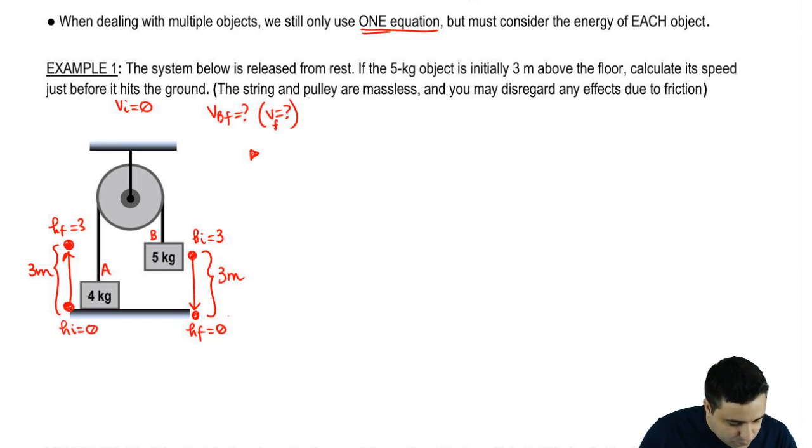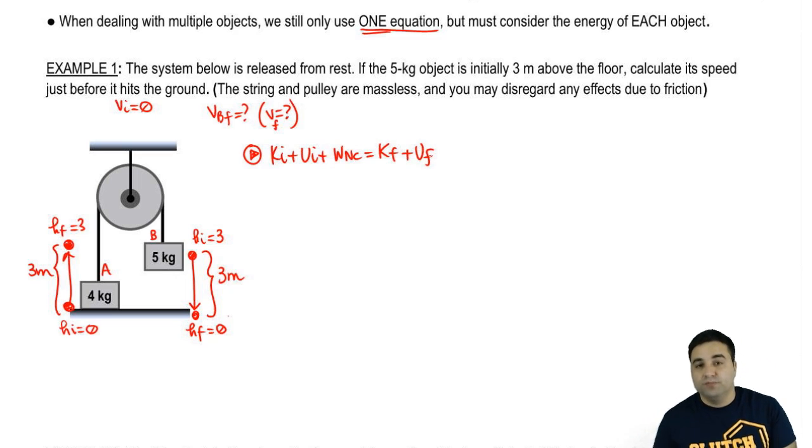Let's write the energy equation. Kinetic initial, potential initial, plus work non-conservative, kinetic final, potential final. The reason why we're going to use the energy equation is because I'm being asked for final velocity or final speed. And the energy equation deals with that. It deals with changes in speeds, with changes in heights. So it's a good use of the energy equation here. But I have to consider every object individually. I'm going to first write the long version of this. But don't get scared. You don't have to do it every time. But I just want to show you all the different elements you have here.